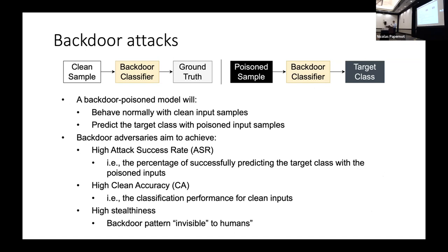To quickly recap backdoor attacks: you've got a clean sample, you put it into the backdoor classifier, and it hopefully gives the right answer. Whereas if you give it a poison sample, it will consistently predict the wrong class. Performance is measured by attack success rate, clean accuracy — the model should perform well for untargeted inputs — and stealthiness, meaning the pattern should be hard for humans to see.